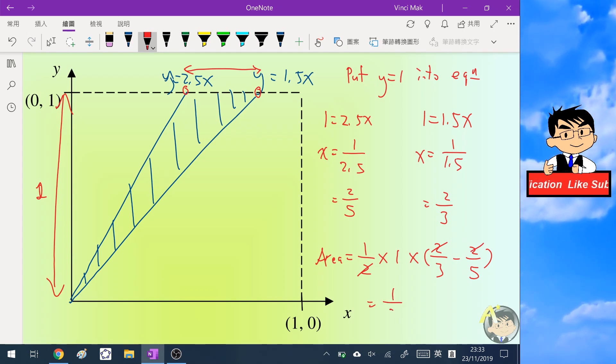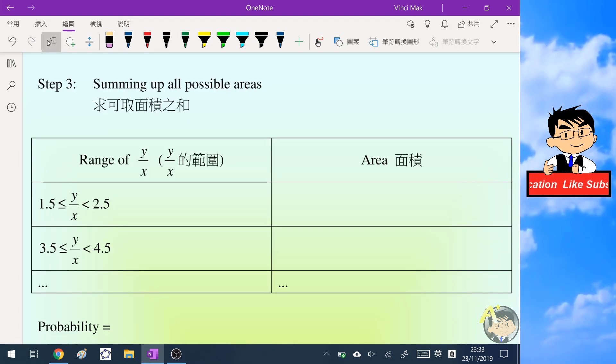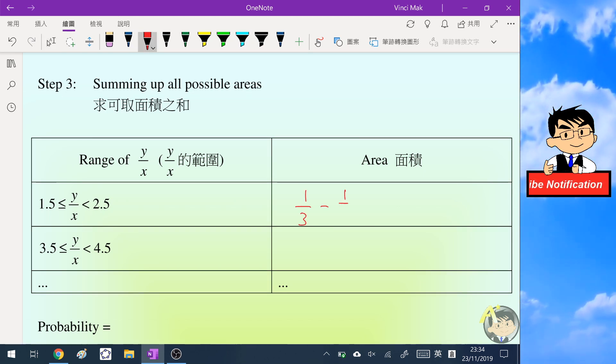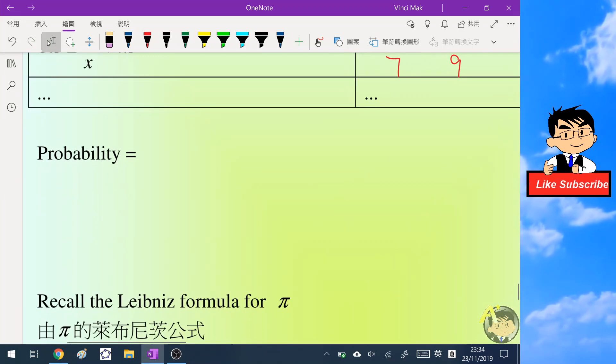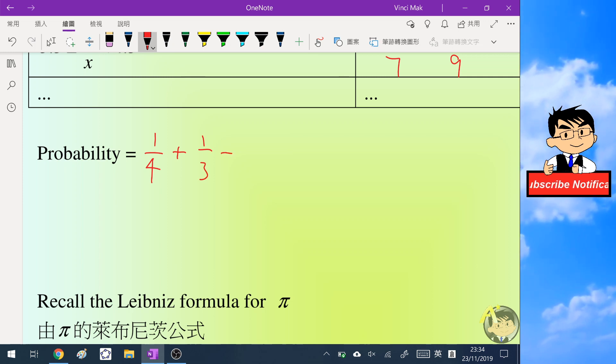So let's continue the process and sum up all the possible areas inside the square. For the first one, we know that the area is 1/3 - 1/5, and the second one is similar, which is 1/7 - 1/9. The probability of the total area will be the first triangle, 1/4, plus 1/3 - 1/5 + 1/7 - 1/9 + dot dot dot.